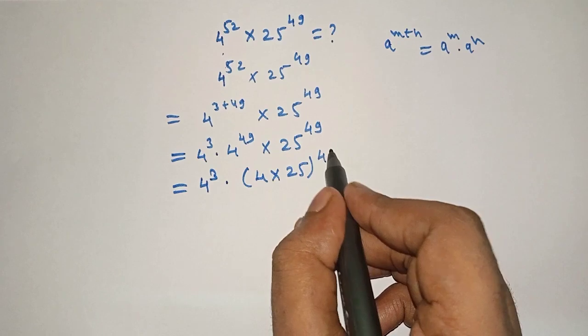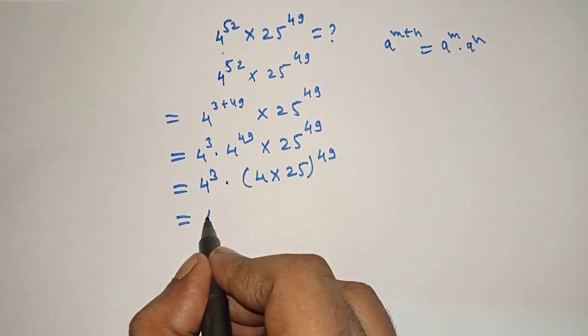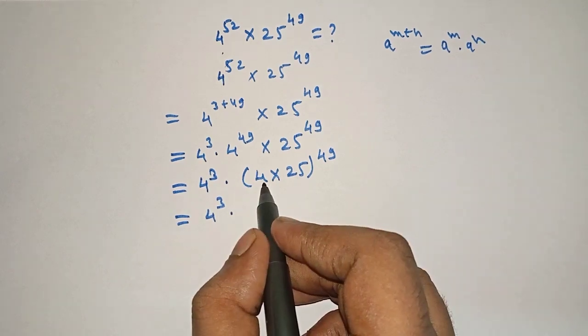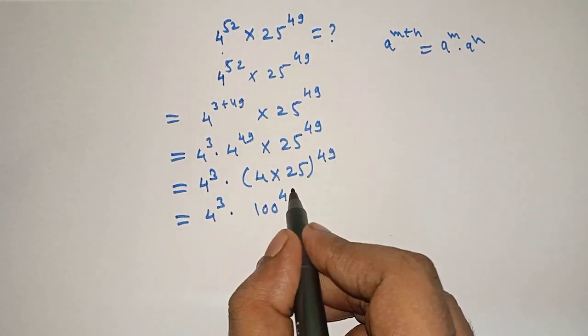Now 4 raised to 3 times 4 times 25 is 100 raised to 49.